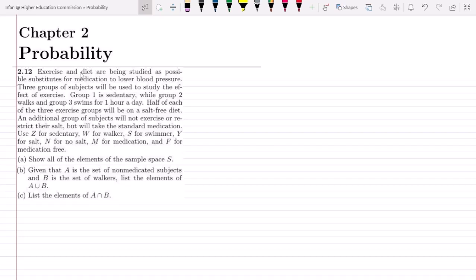This is problem 2.12 of chapter 2. The statement of this question is: exercise and diet are being studied as possible substitutes for medication to lower blood pressure. Three groups of subjects will be used to study the effect of exercise. Group 1 is sedentary, while group 2 walks, and group 3 swims for one hour a day. Half of each of the three exercise groups will be on a salt-free diet.